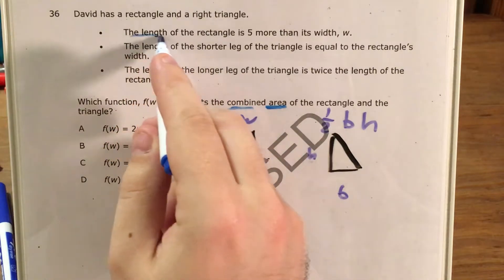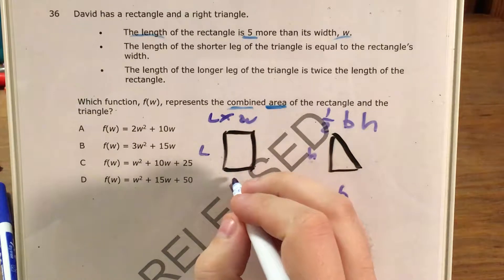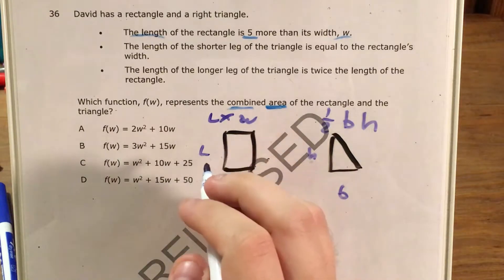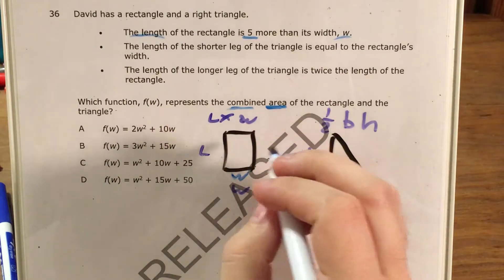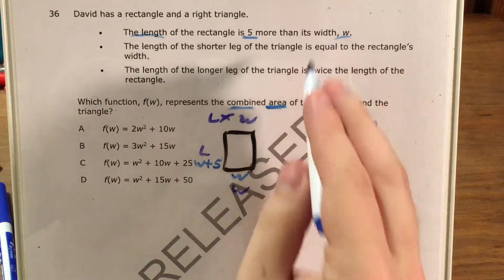I'm going to start with this sentence: The length of the rectangle is 5 more than its width W. So the width of the rectangle, the problem just calls W, so I'll fill that in in blue to distinguish it from just the general idea of width here. And now the length is 5 more than W, so that would be W plus 5, 5 more than the width.